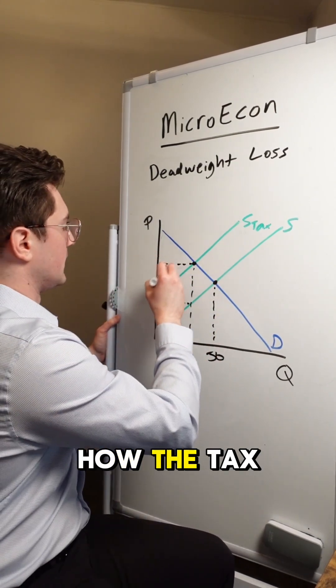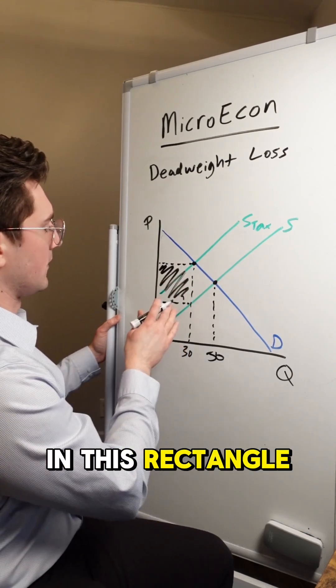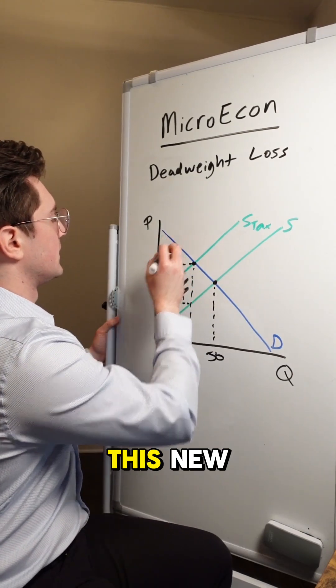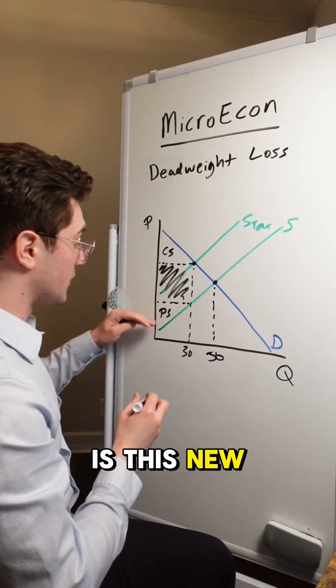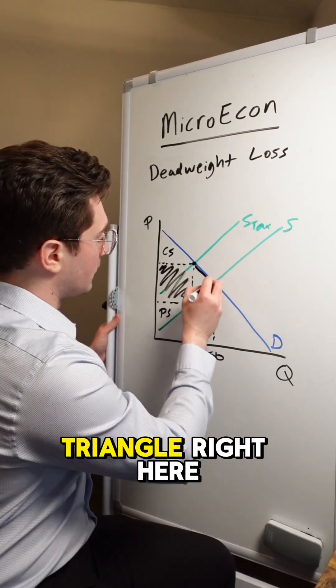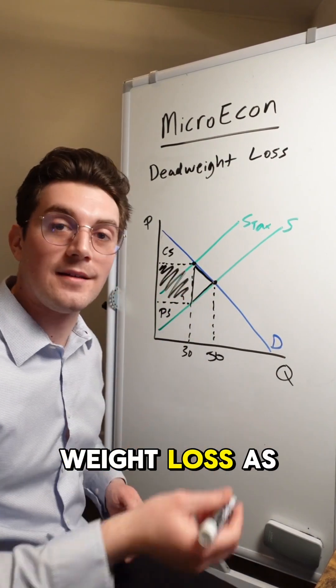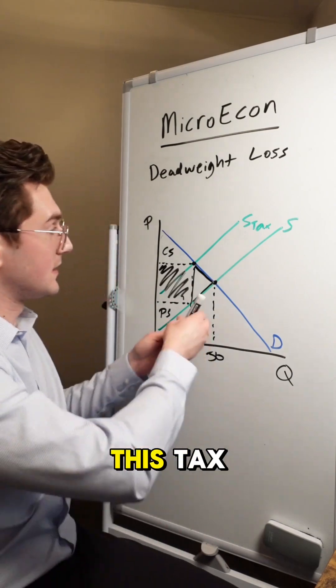Now we covered before how the tax revenue would occur in this rectangle. And then the consumer surplus is this new smaller upper triangle and producer surplus is this new smaller lower triangle. This triangle right here is the deadweight loss as a result of this tax.